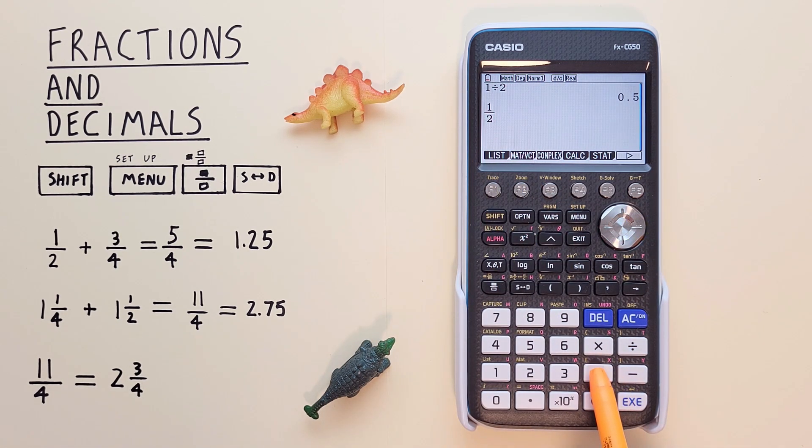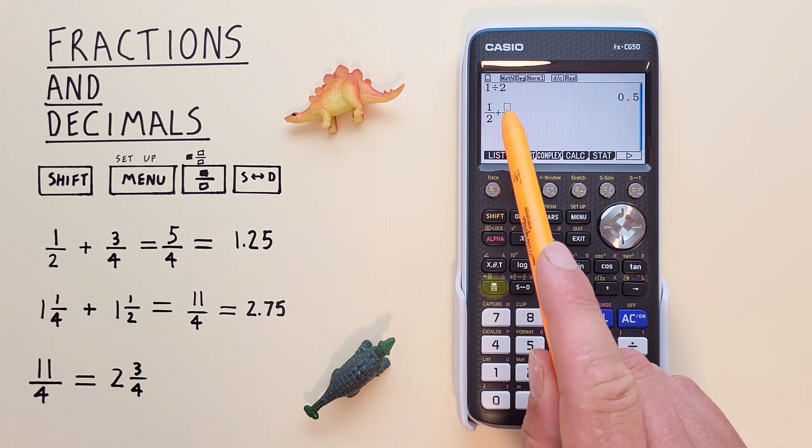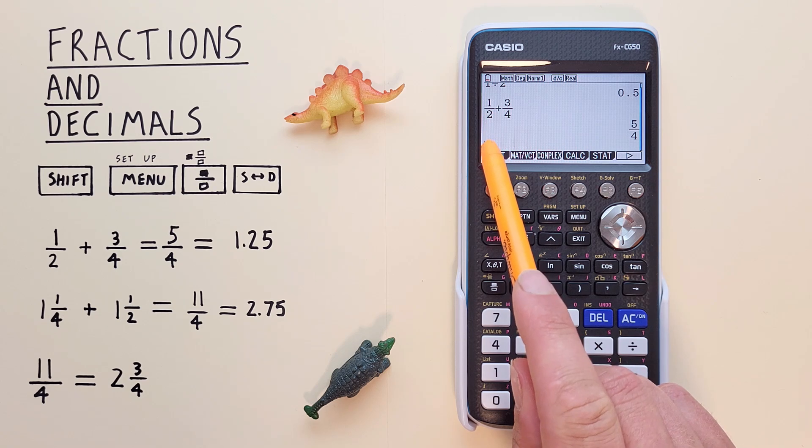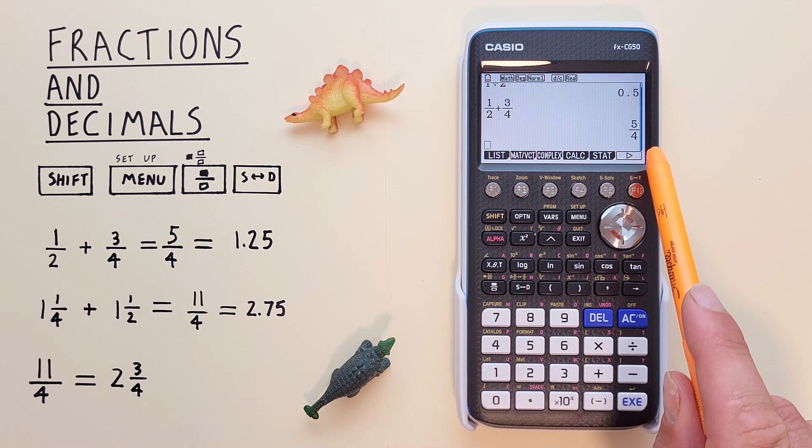And we go plus 3 over 4. So again, the fraction. There's our two boxes. 3, scroll down, 4. Now we can hit the exe or equals. And we see we get 1 over 2 plus 3 over 4 is equal to 5 over 4.